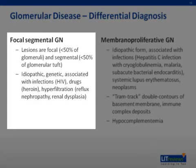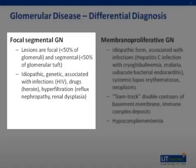Focal segmental glomerulosclerosis manifests with proteinuria. Histopathology shows scarring in some glomeruli, which is referred to as focal. Manifestation occurs in only some segments of the glomerular tuft, which is referred to as segmental. Etiologies are primary idiopathic, genetic, associated with viral infections, drugs, and/or reduced nephron mass with hyperfiltration — for example, in reflux nephropathy or renal dysplasia.